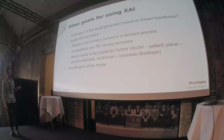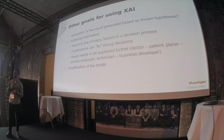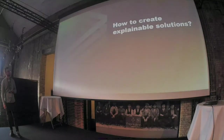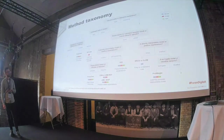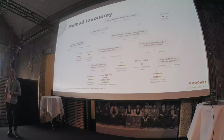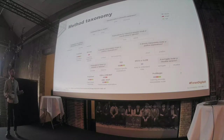Another use case is simplification of the model. You might train a deep neural network to predict something, but with the help of explainable AI find out it only looks at a handful of factors — so can you make a simpler model using just those factors instead of 1,000 variables? How to create explainable AI? There are a lot of different methods. These are just the ones IBM developed, and you can add many more. It's actually very difficult to say which method to use in which context because there are so many with different purposes.